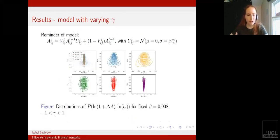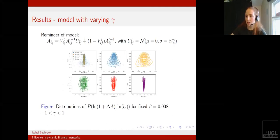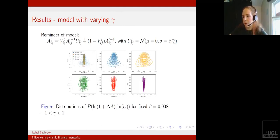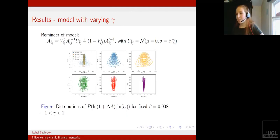Now we want to look at the parameters which control the size of the resultant change. Here I'm looking at the joint distribution of the size of relative changes with the values of LE, focusing on the gamma parameter.